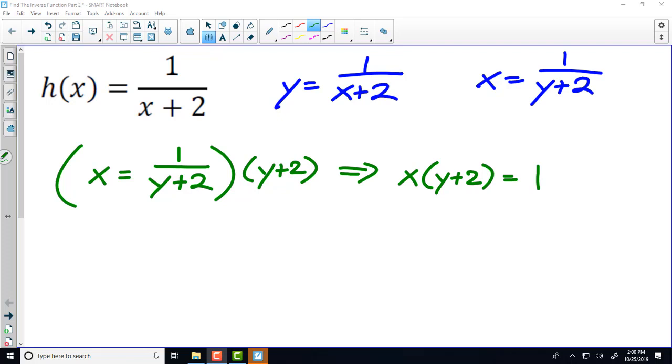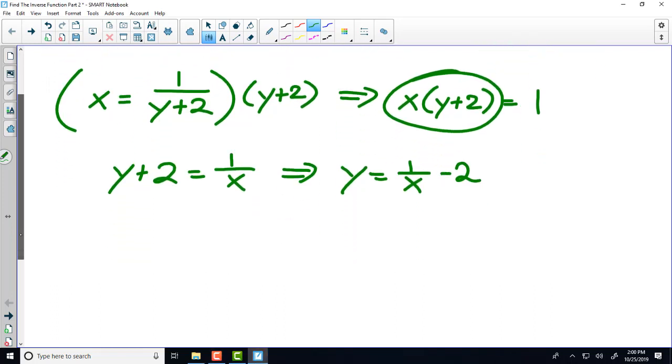Now there's a couple ways you can go about finishing this problem. What I'm going to do is I'm going to divide by x. So that's going to give me y plus 2 equals 1 over x. Then I'm going to subtract 2 from both sides, which gives me 1 over x minus 2. If you had chosen to distribute on this step right here and then solve for y, you would have gotten another answer that is equivalent to this answer. You might have gotten y equals 1 minus 2x all over x.